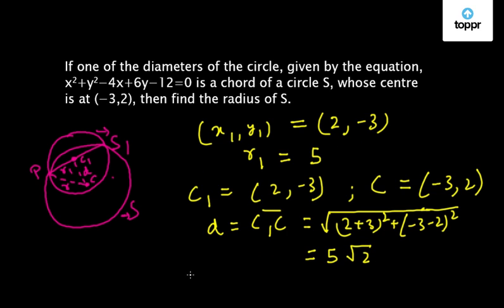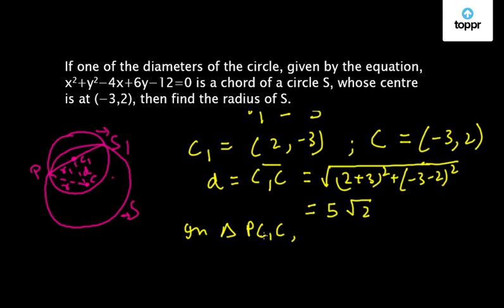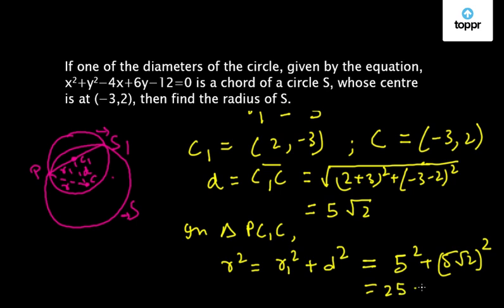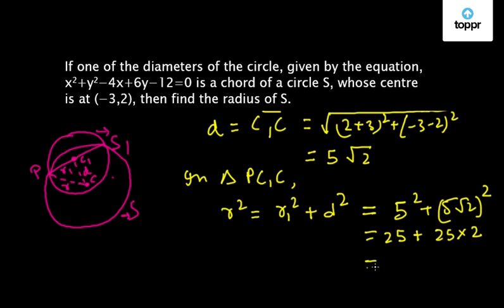Now if we see in the triangle PC1C we have from Pythagoras theorem R² = R1² + D². And we have already calculated R1 and D so they are 5² + (5√2)² that is 25 + 25 × 2 and this comes out to be 75.